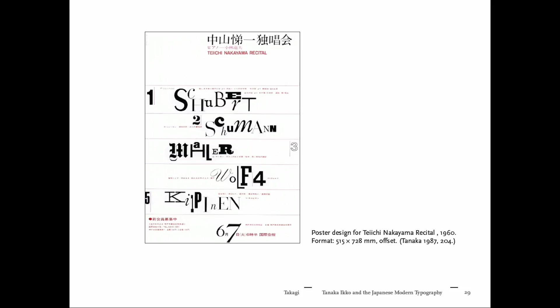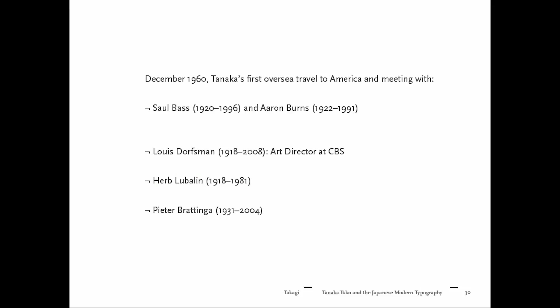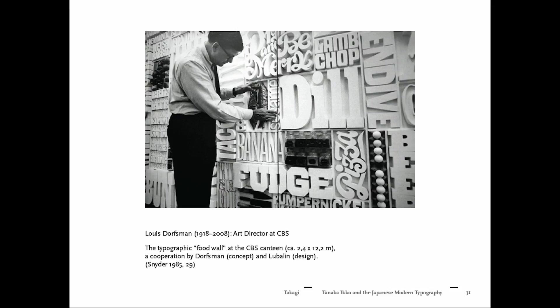Shortly after, Tanaka designed a poster where he started to play with Latin letters, making them more like an image than readable text. He was still searching and trying out, but this encounter with American typography led Tanaka to decide he wanted to travel to America as well — to meet contemporary designers, talk with them, and learn how to develop very expressive design. He met Lou Dorfsman, Herb Lubalin, and Peter Brattingham, all of whom influenced him in different ways.